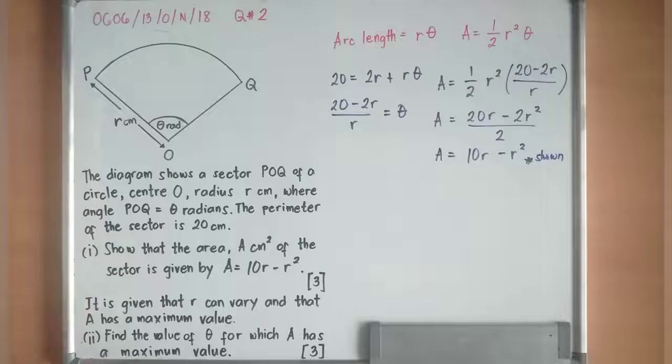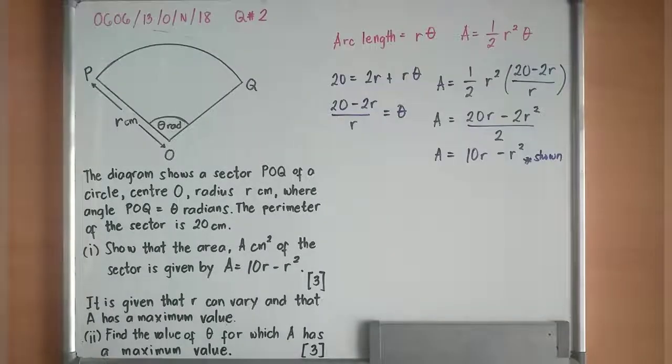Next, it is given that R can vary and that A has a maximum value. Find the value of theta for which A has a maximum value. This is not so much related to circular measure, but about derivatives. When we're talking about maximum value, it's related to the maximum point of a curve. When dealing with maximum point, we associate it with stationary point.